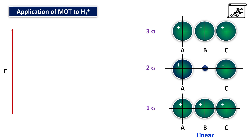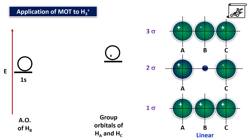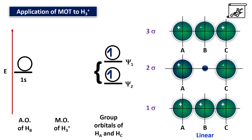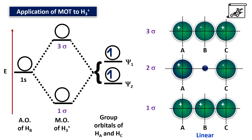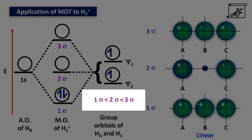Now we have to draw the molecular orbital diagram. At the left hand side we have atomic orbitals of the central atom, and on the right hand side there are two group orbitals — psi 1 and psi 2 — with one unpaired electron each. At the center there will be molecular orbitals of trihydrogen ion. The 1s orbital combines with psi 1 group orbital, forming a bonding molecular orbital at lower energy, and an anti-bonding molecular orbital at higher energy. Psi 2 remains non-bonding at the center. According to the Aufbau principle and Hund's rule, both electrons occupy the 1 sigma bonding molecular orbital, giving an energy order of 1 sigma, then 2 sigma, then 3 sigma.